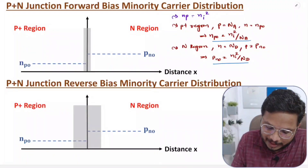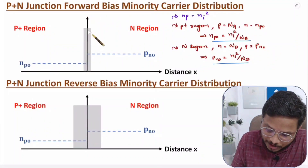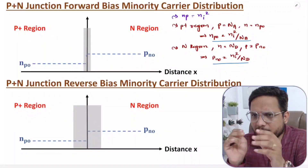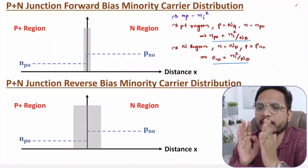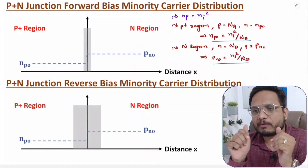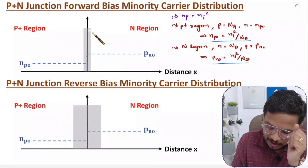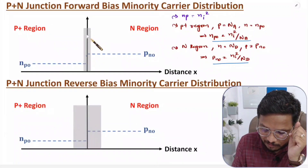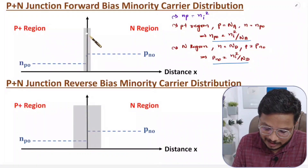Now what happens in forward bias? In forward bias, the depletion region width decreases. Remember: in a PN junction in forward bias, depletion region width decreases; in reverse bias, depletion region width increases.